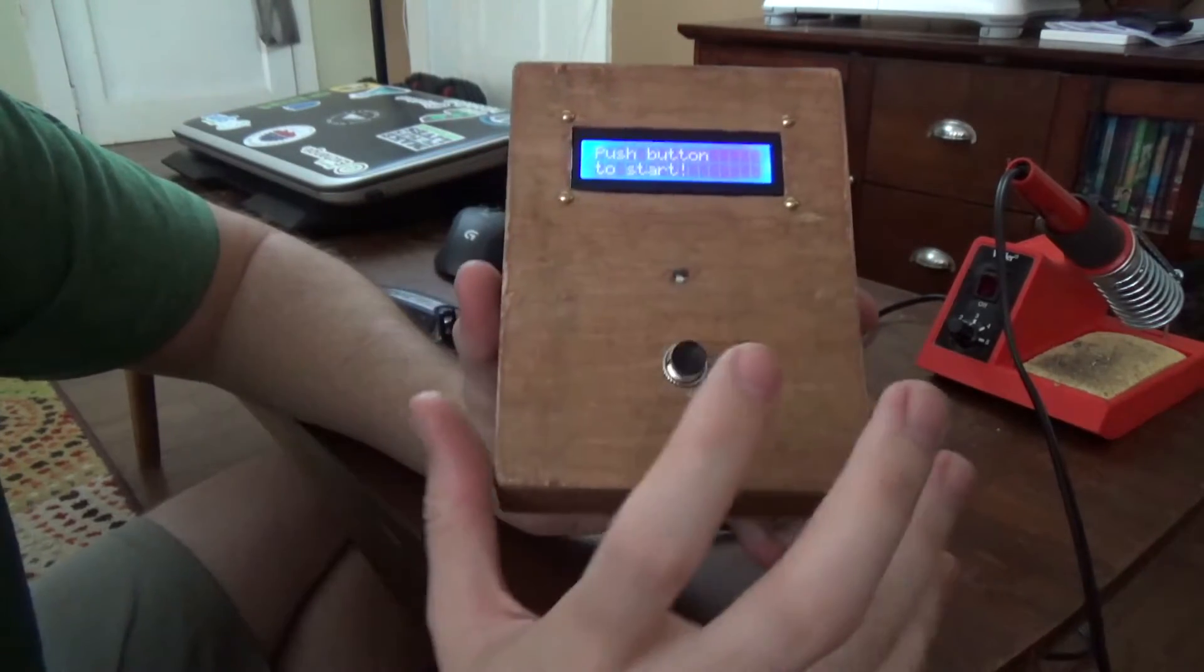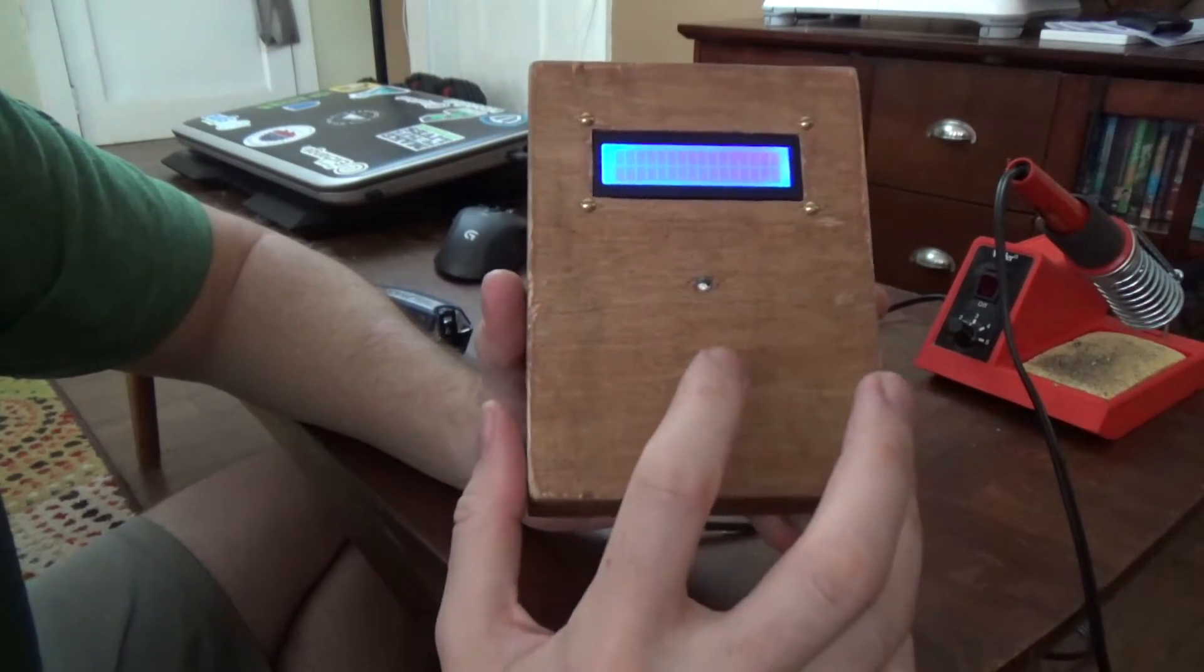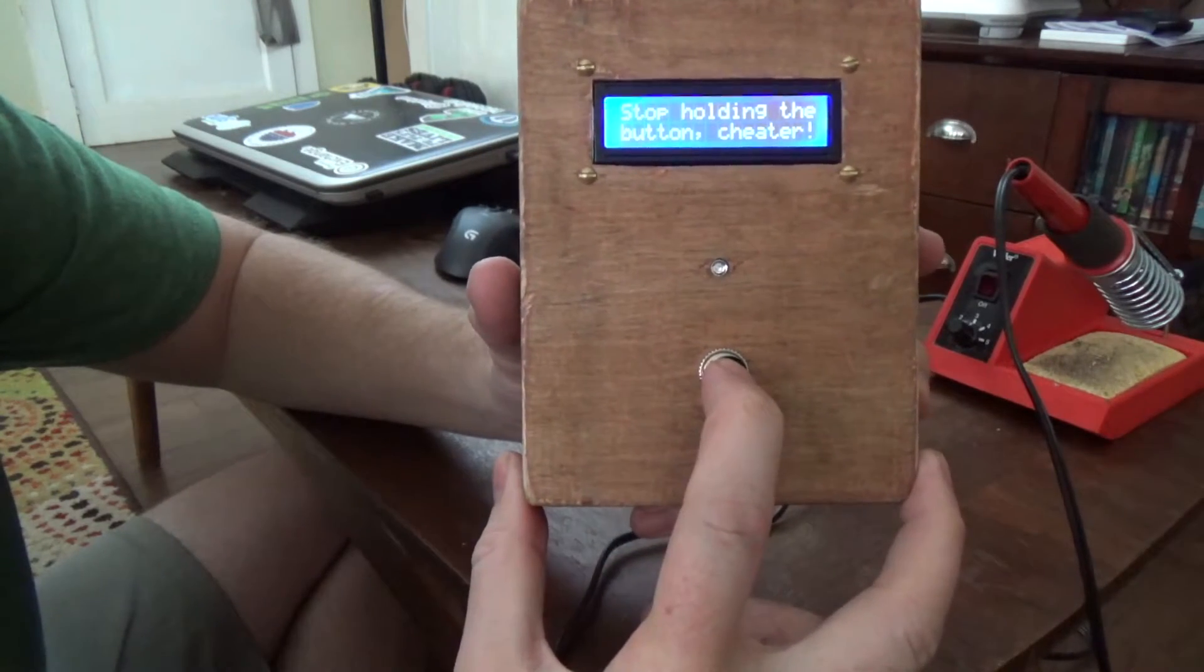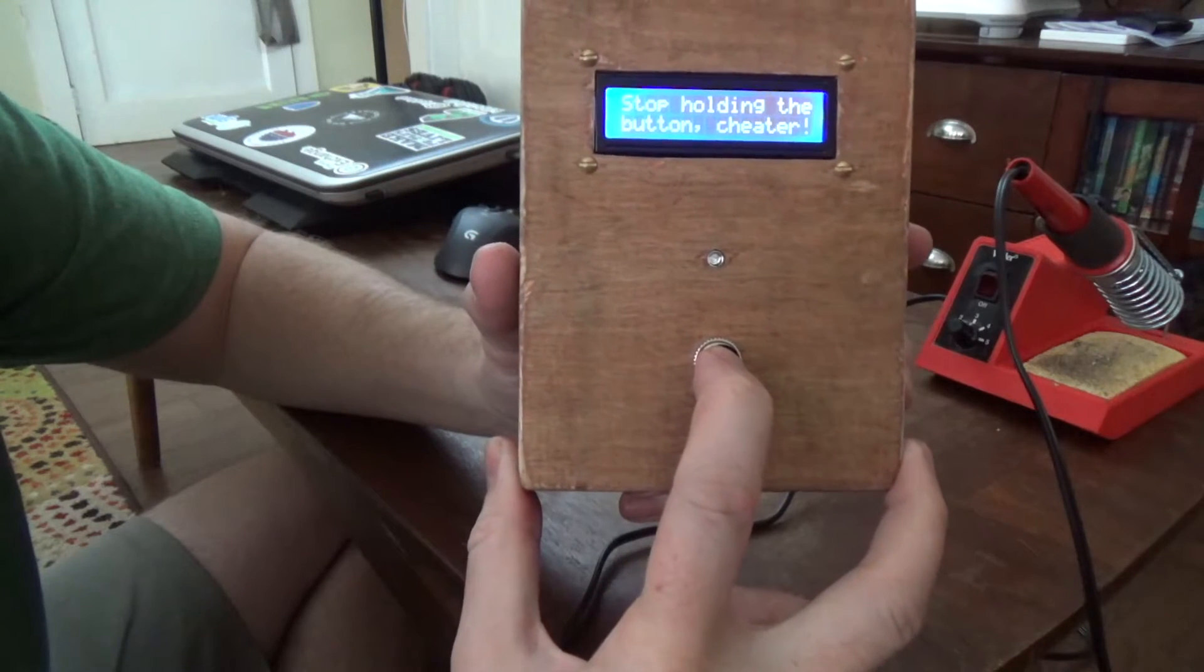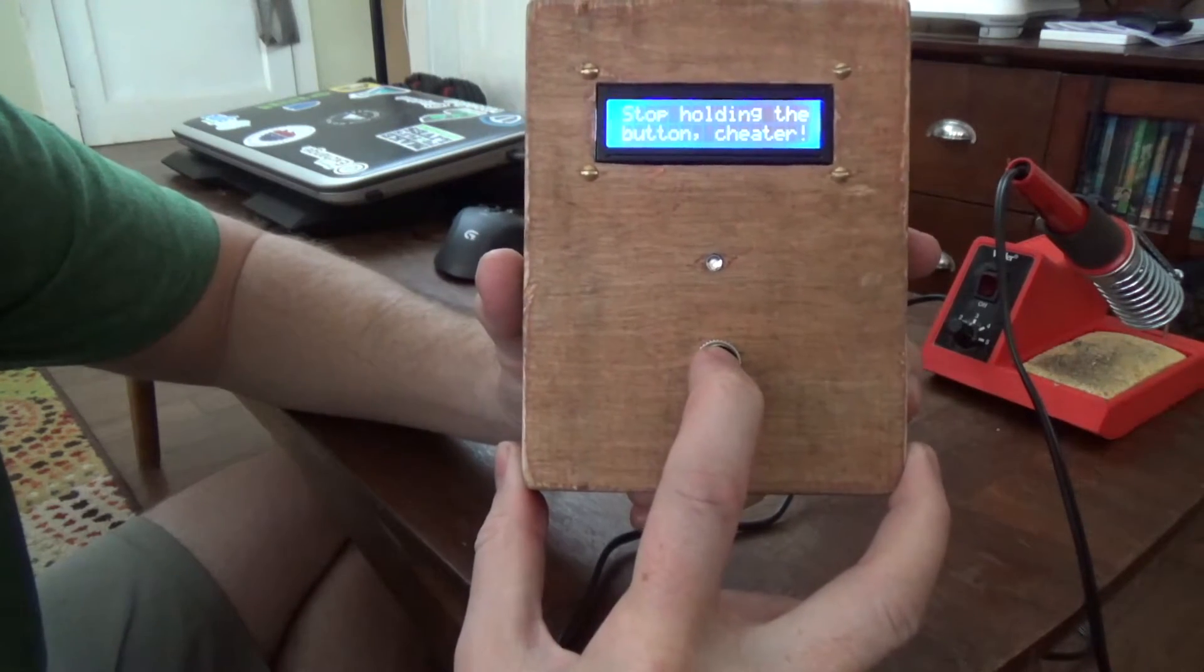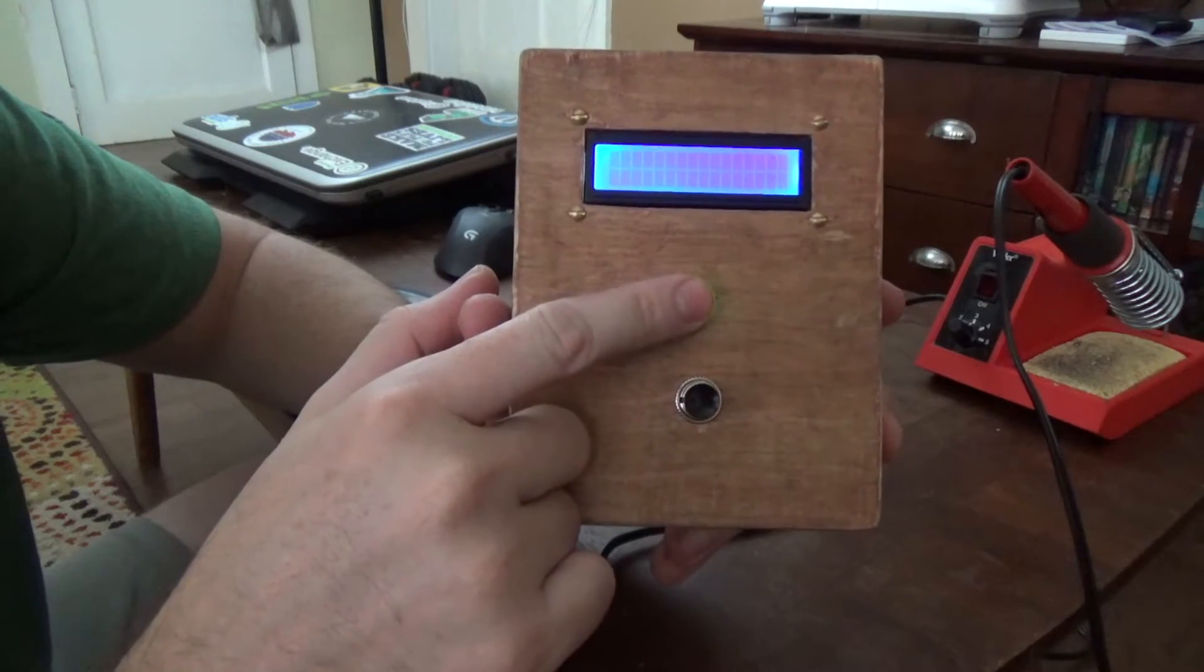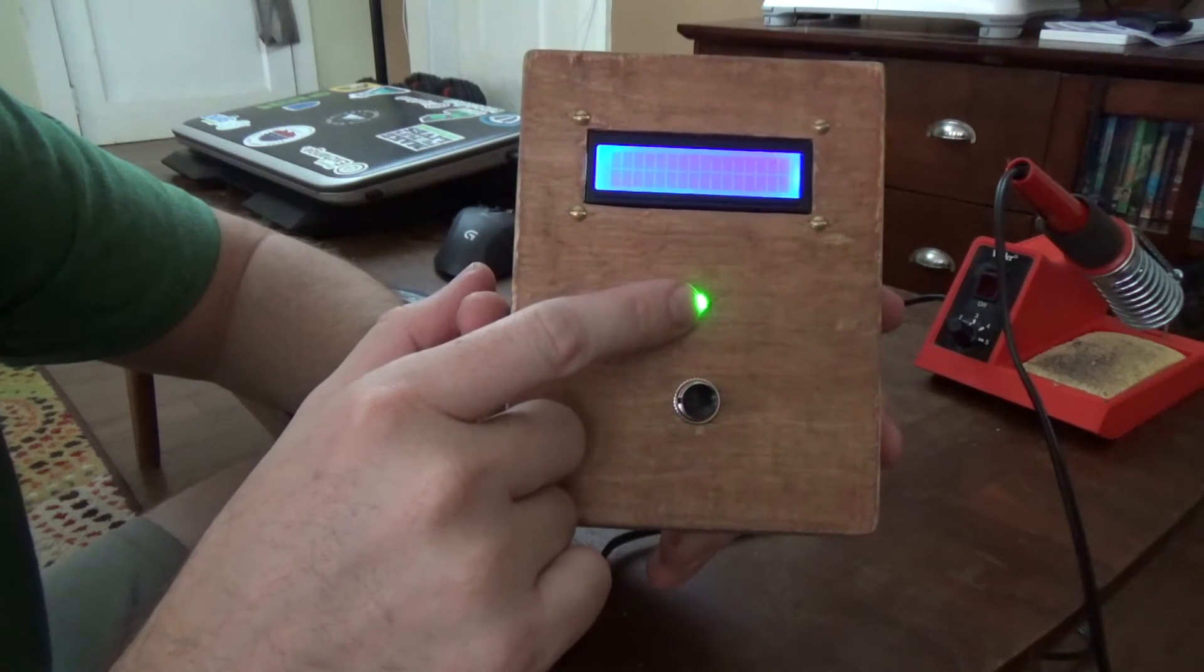To explain how the programming works, you can push the button, but if you hold the button down it'll detect that and assume you're trying to cheat, so it'll actually reset the game and give you this stop cheating message. This light does not turn on at the same time. It's a random time between I think 3 and 5 seconds.